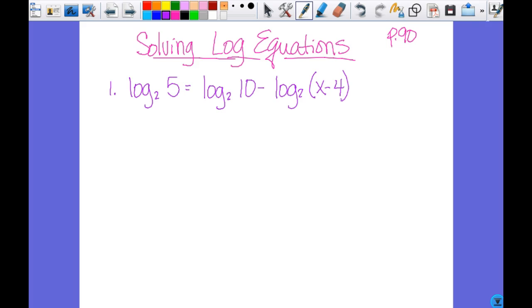So on the left, I'm good. I just have one log, so this will just remain log base 2 of 5. And then over here, these two have the same base and I'm subtracting. So when I condense them, what do I do? Divide. So this is going to give me log base 2 of 10 over x minus 4. Everybody with me?